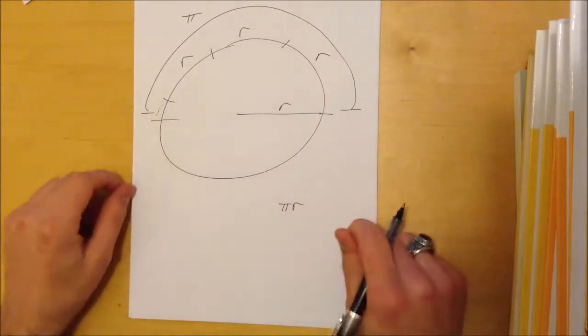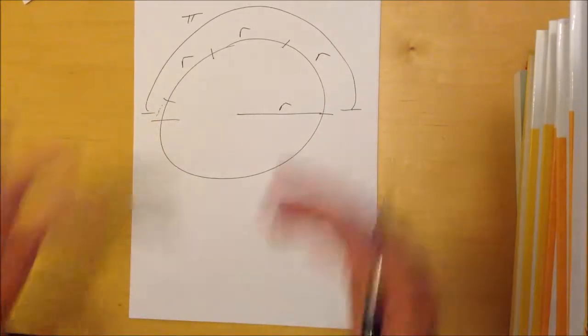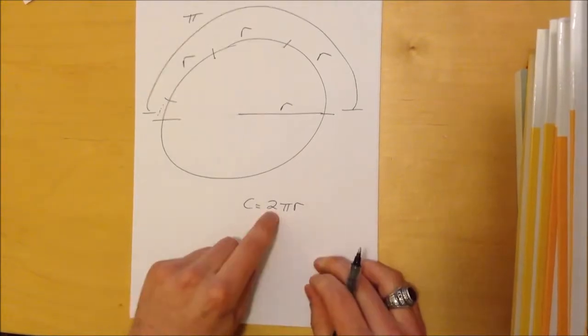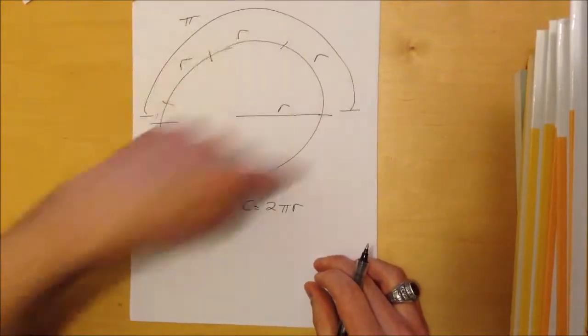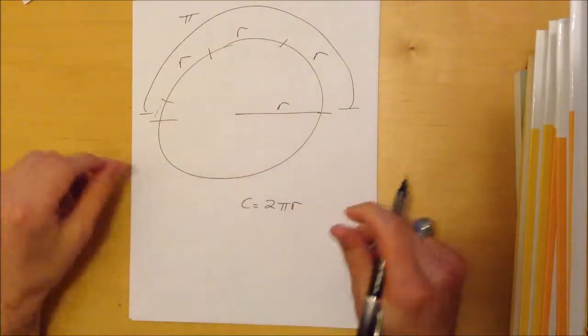How do I get the whole circle? Yeah, double it! Times two. So circumference is two pi R. You have pi R, two pi R. Incredibly simple.